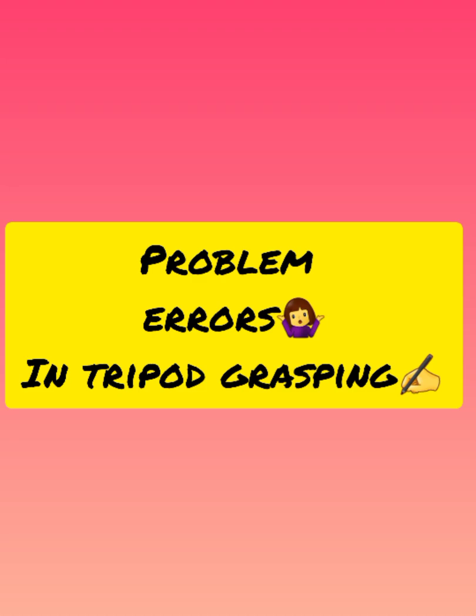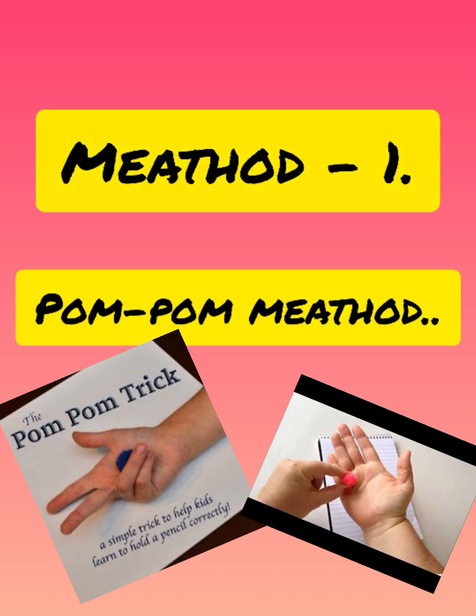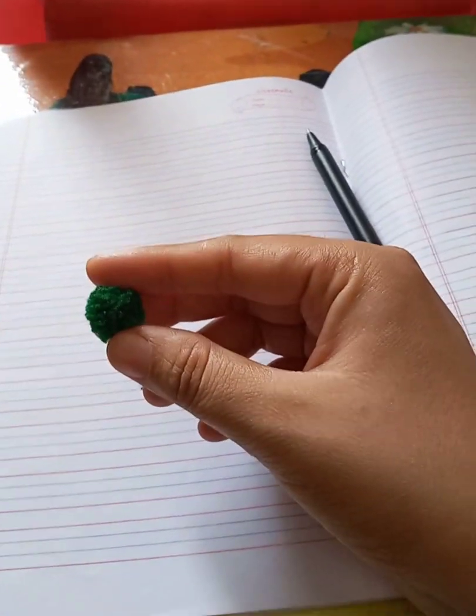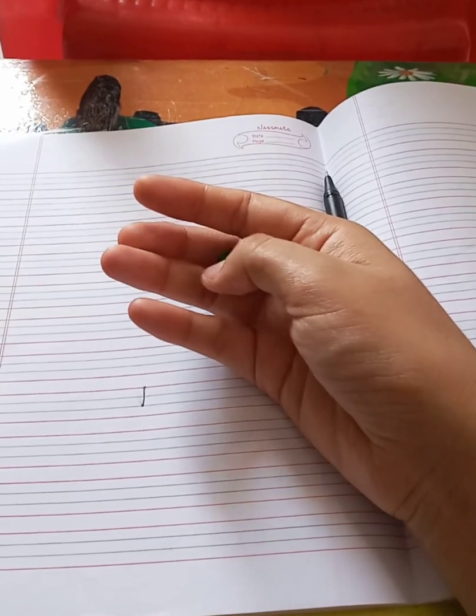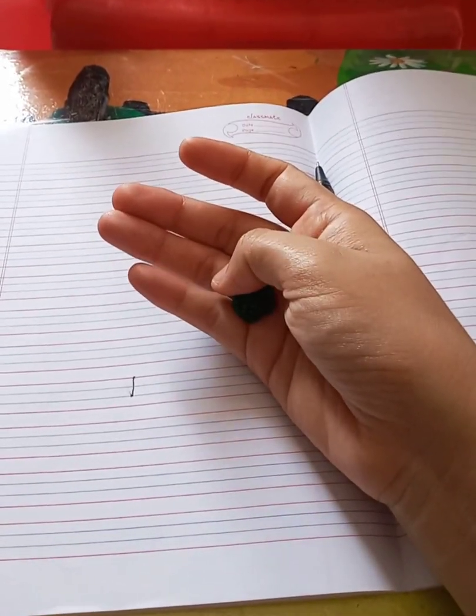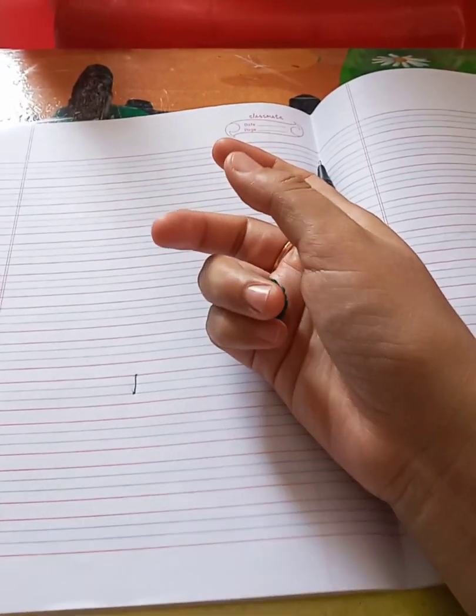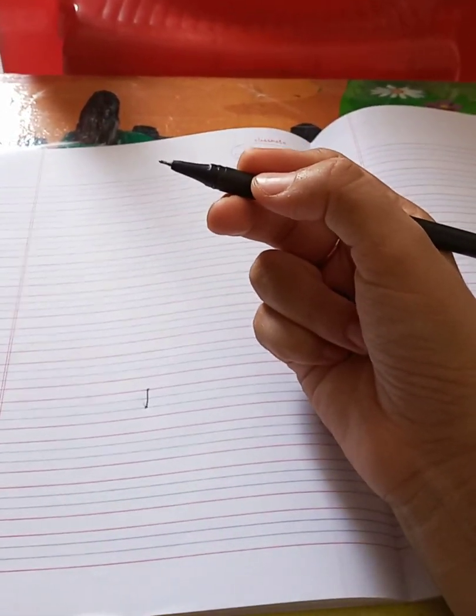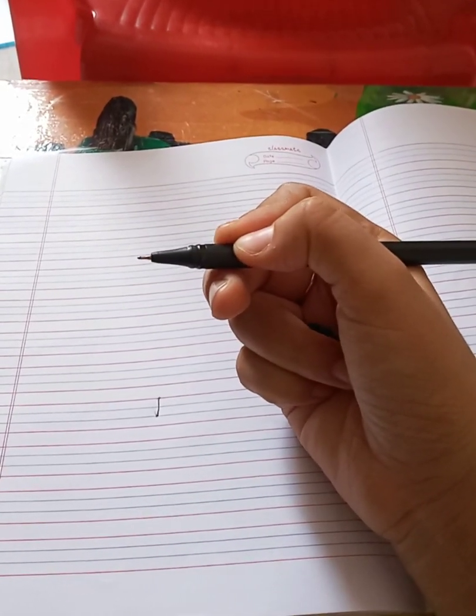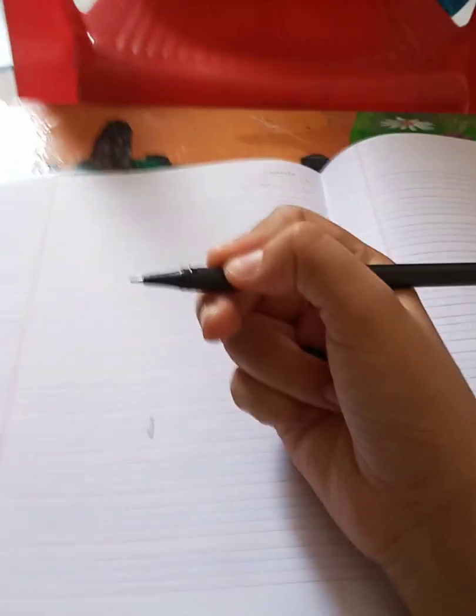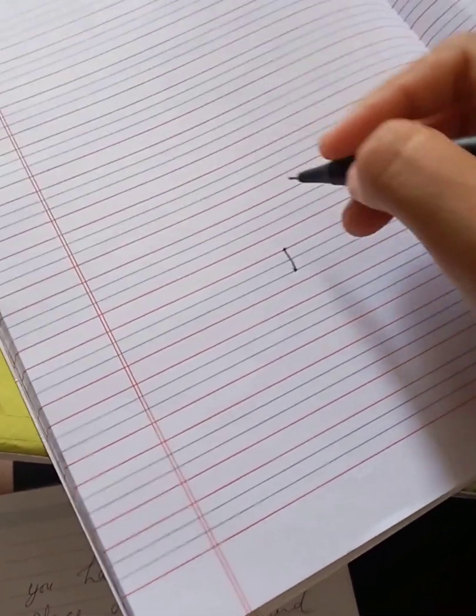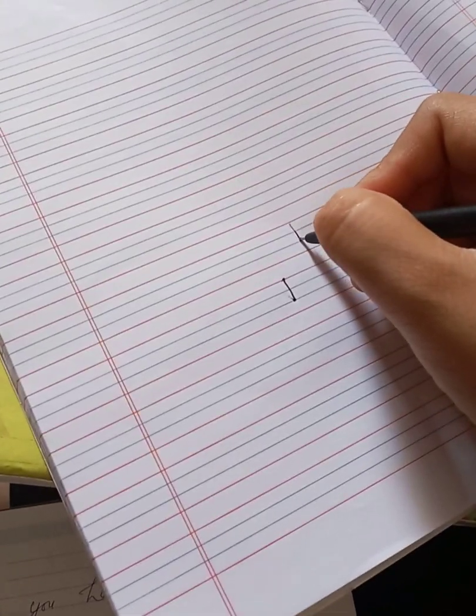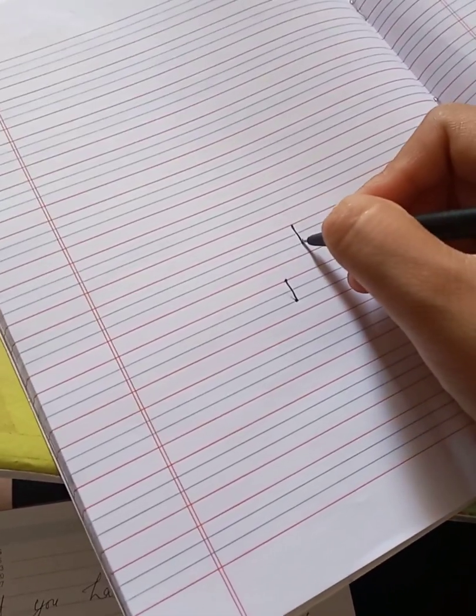This was our tripod grasp and now let's discuss the problems. The first method is pom-pom method. Pom-pom, play-doh, cotton ball, mini eraser can also be used for this. What you have to do is just place the pom-pom ball on your last finger and the ring finger, curl them in this fashion and just hold your pencil. Don't move these two last fingers. The middle finger should be the resting point for the pencil. Now when your child will write, the other three fingers will not unnecessarily move along with the tripod grasp.